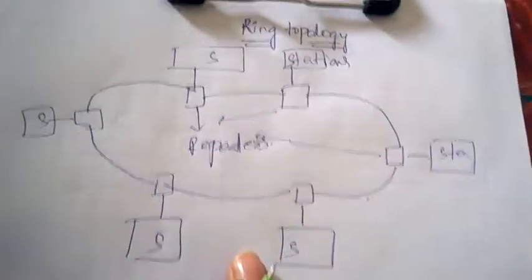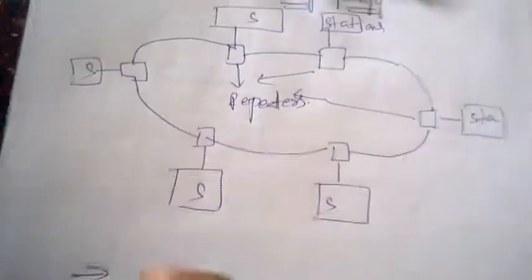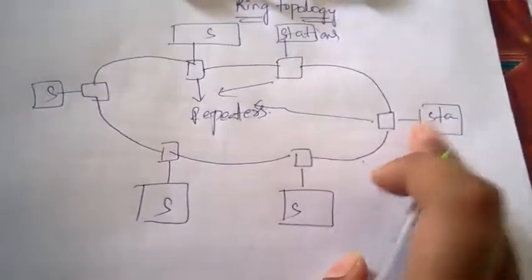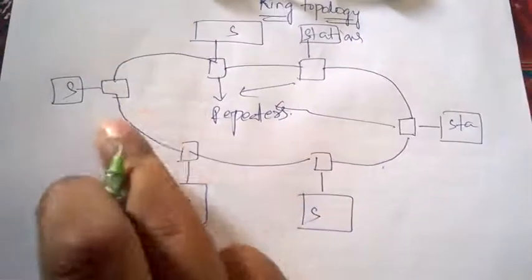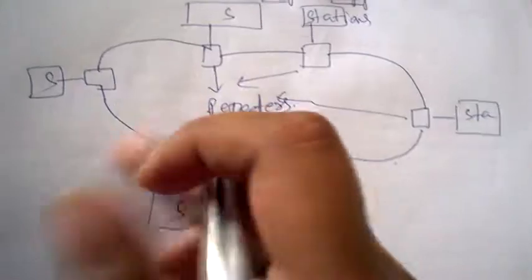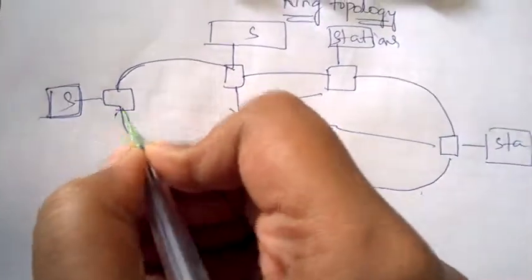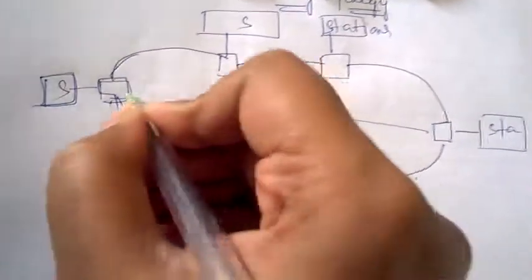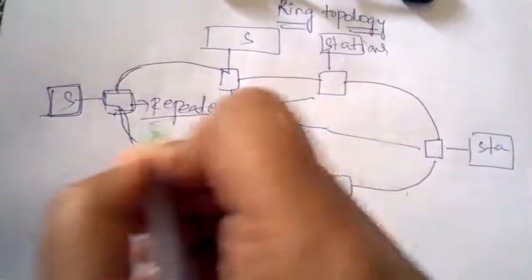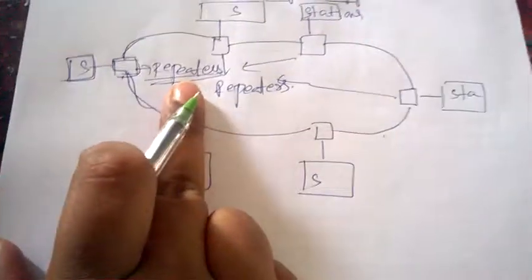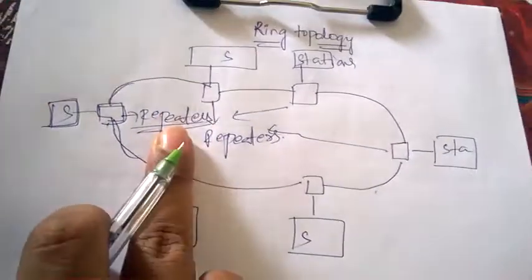In ring topology, all the stations will be connected to the links with the help of repeaters. The stations are connected to the cables with the help of repeaters. Now let us understand why we use repeaters.